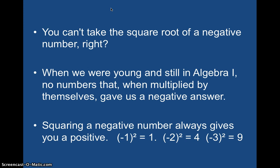Back in Algebra 1 when we talked about square roots, you figured out what multiplies by itself to get whatever's inside the radical. Well, when you square a negative number, you can't get a negative back. So there's no way to really take a square root of a negative number. The square root of negative 1 — what number squared gets you negative 1? 1 squared gives positive 1, and negative 1 squared also gives positive 1. So there really isn't one. You can't square a negative number to get a negative.